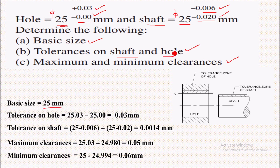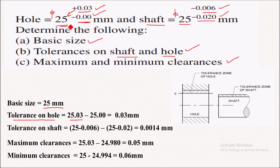Now we have to calculate the tolerance on hole and shaft. We are providing tolerances in order to have proper fitment between hole and shaft. Tolerance on hole equals upper limit 25.03 minus lower limit 25.00, which gives 0.03 mm — that is the tolerance on the hole.